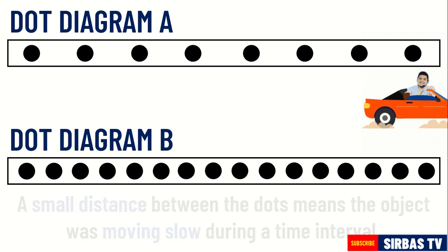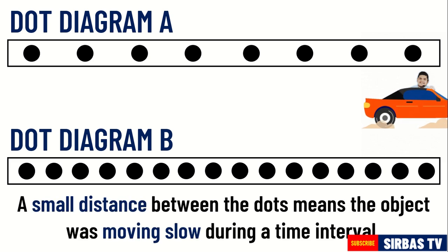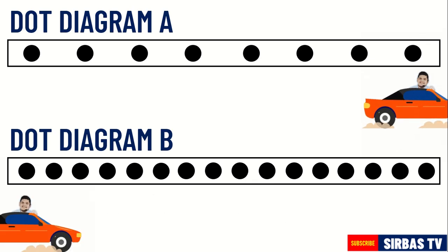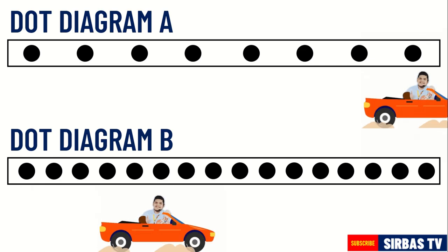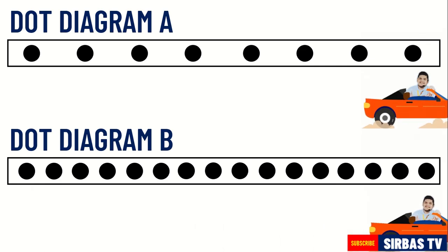On the contrary, a small distance between the dots indicates that the object moved slowly during the time interval. Hence, the object in dot diagram B is moving slowly.